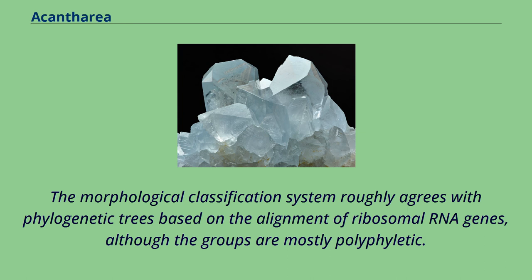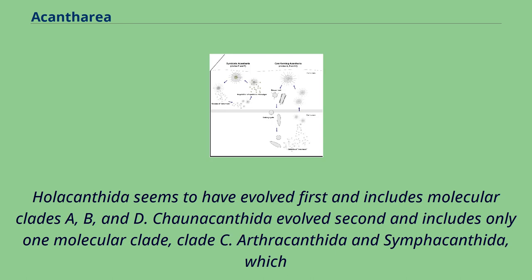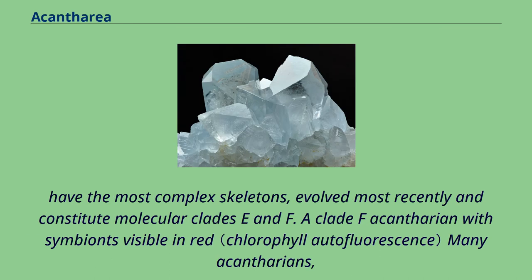Holacanthida seems to have evolved first and includes molecular clades A, B, and D. Choanacanthida evolved second and includes only one molecular clade, clade C. Arthracanthida and Symphacanthida, which have the most complex skeletons, evolved most recently and constitute molecular clades E and F.